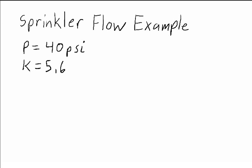Hello everyone. This video is going to give an example for how to calculate the flow coming out of a sprinkler given a known pressure and a k-factor. So let's say we have a pressure at the sprinkler head of 40 psi and a sprinkler with a k-factor of 5.6.